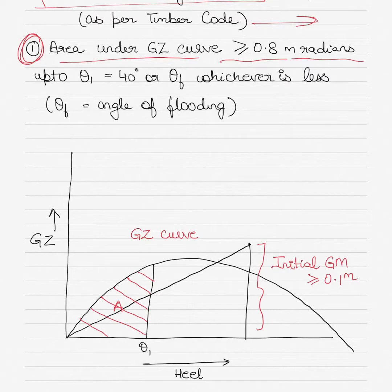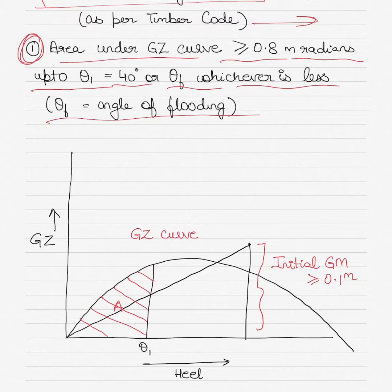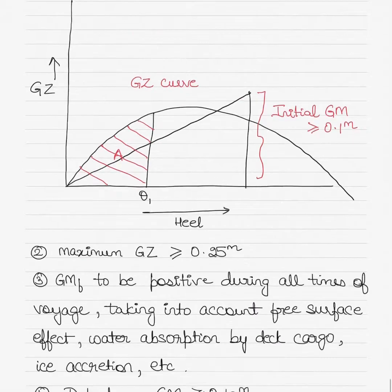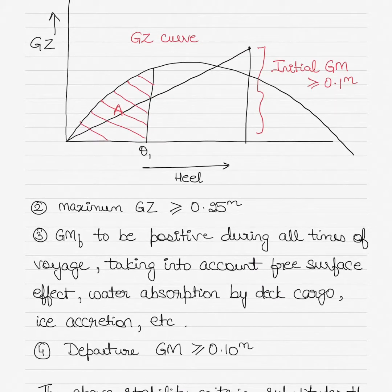The area under the GZ curve is calculated up to theta 1, which equals 40 degrees, or the angle of flooding — whichever is less. That area should be greater than or equal to 0.8 meter radians, as calculated using Simpson's rule. The second requirement is that the maximum GZ should be greater than or equal to 0.25 meters. GZ is the righting lever which brings the ship back to the upright condition.